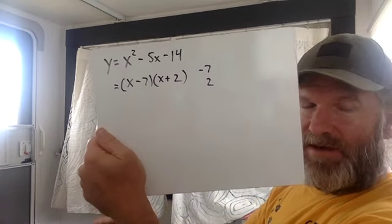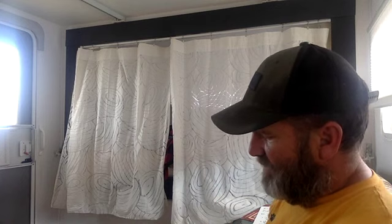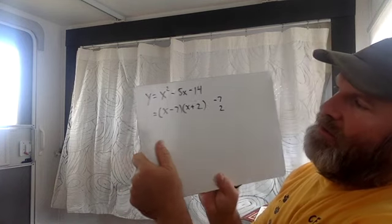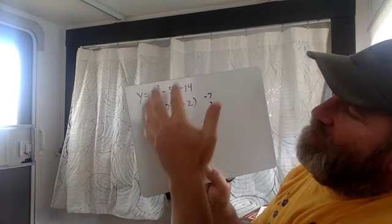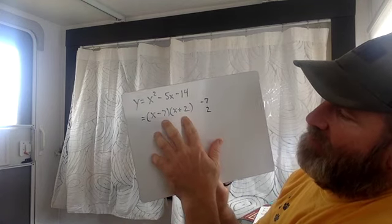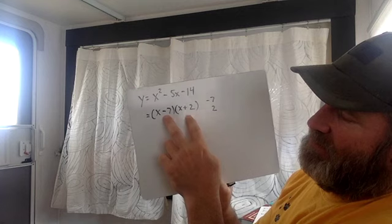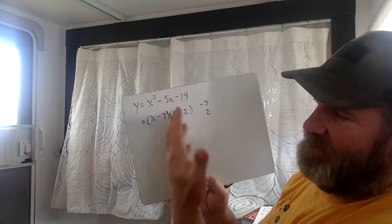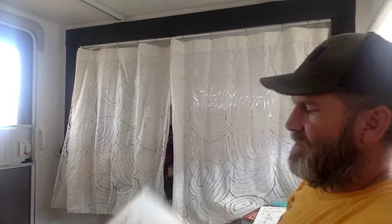Now if you wanted to find the x-intercepts, you'd have to say, what do we put in for x to make y equal to 0? Well, now that we factored it, we know that one of these two parentheses has to equal 0 because 0 times anything is 0.